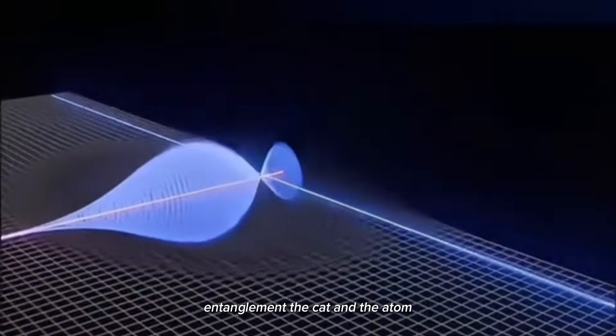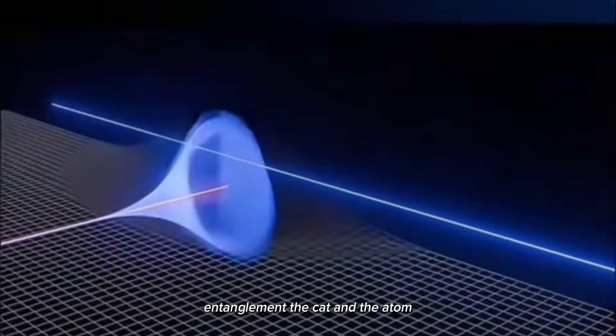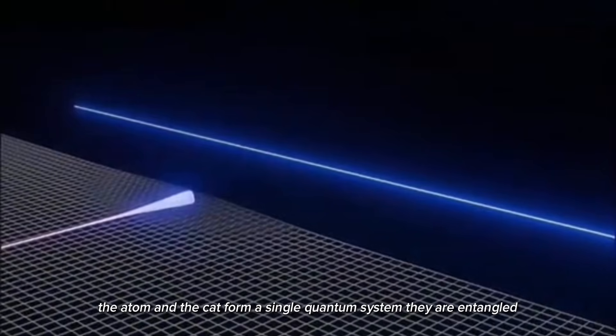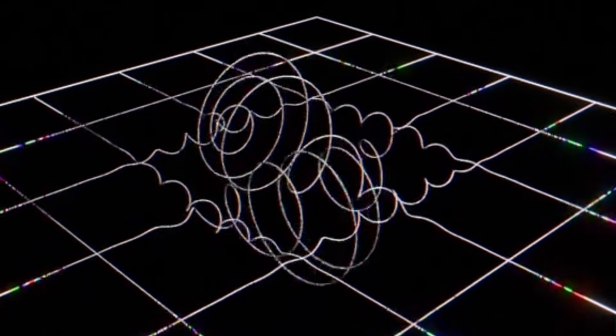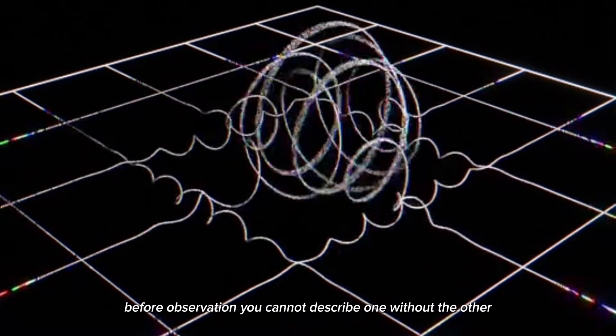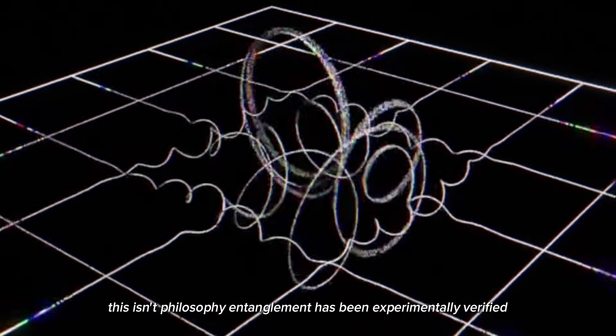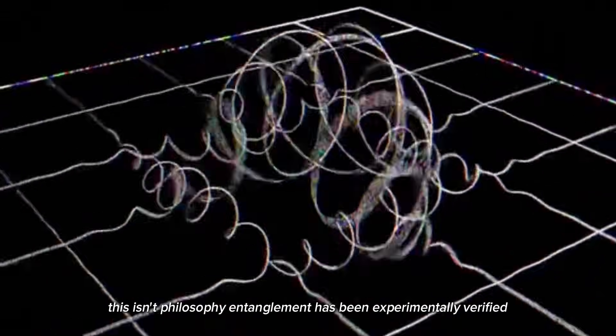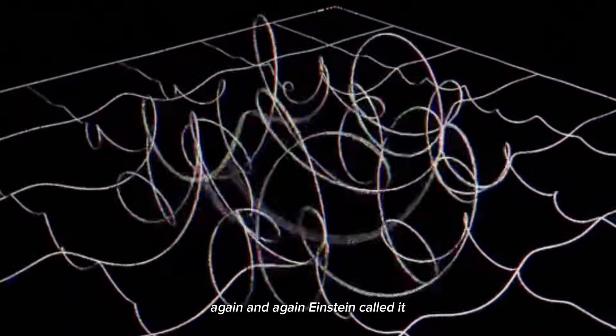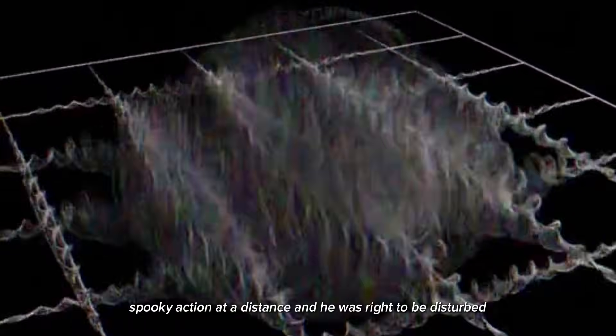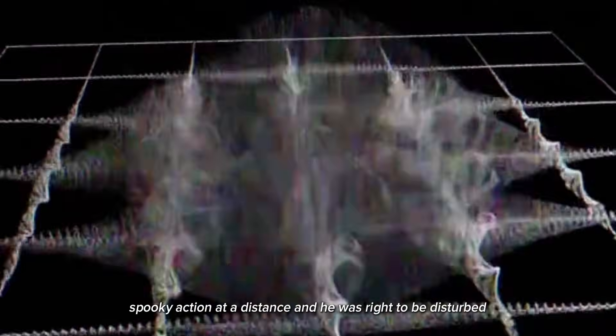Entanglement. The cat and the atom. The atom and the cat form a single quantum system. They are entangled. Before observation, you cannot describe one without the other. This isn't philosophy. Entanglement has been experimentally verified again and again. Einstein called it spooky action at a distance. And he was right to be disturbed.